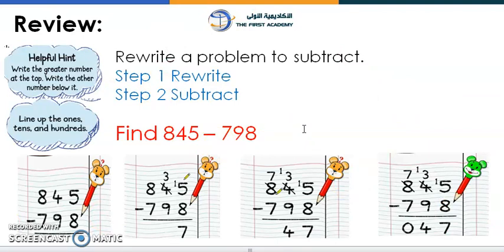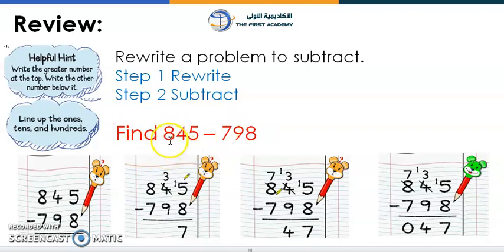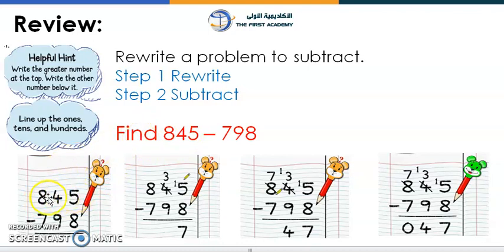The two important steps are rewrite and subtract. Now find the difference between these numbers: find 845 minus 798. Well done! First of all, we're going to write the numbers. We will take the greater number and put it on top, and the smaller number below.